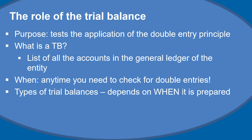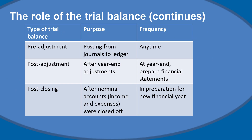There are different types of trial balances, and these all depend on when the trial balance is prepared. The pre-adjustment trial balance is prepared when we post from the journals to the ledger, to verify compliance with the double entry principle. The post-adjustment trial balance is prepared at year end after all adjustments have been made. Once we are done with year end, we close off the nominal accounts — income and expense accounts — and prepare the post-closing trial balance, which helps prepare our accounting system for the new financial year.